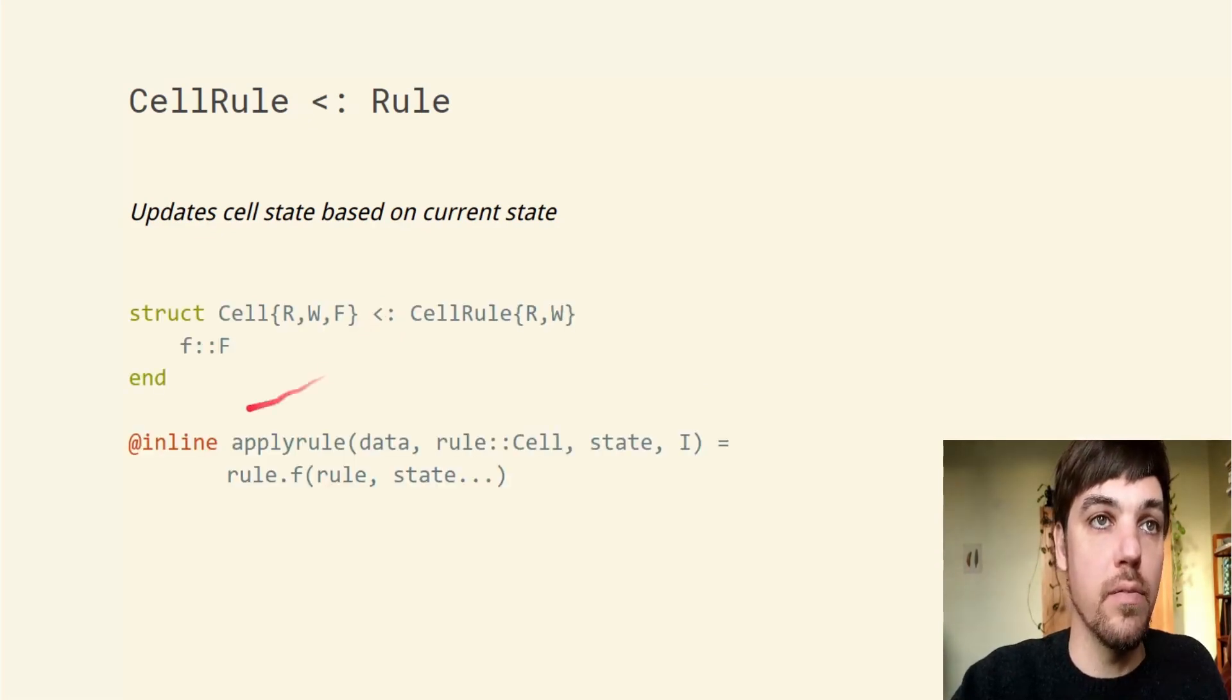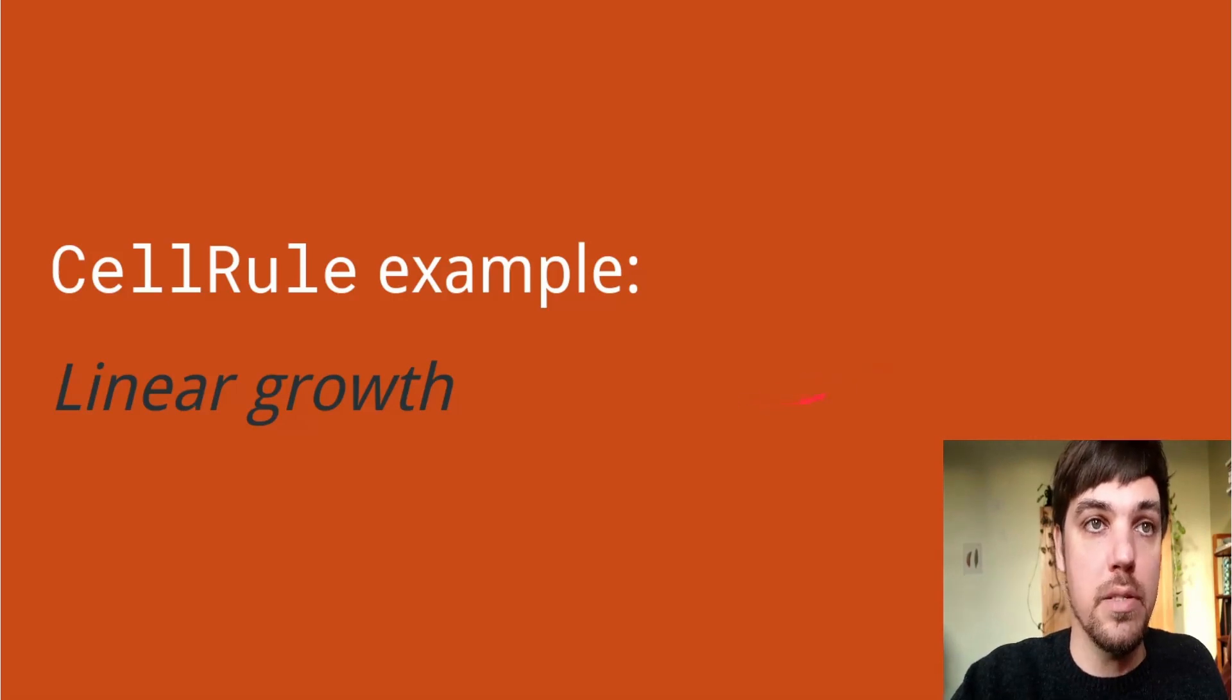We can define that very simply for this rule that just runs an anonymous function. It's available in the dynamic grids package. It defines an apply rule method in which the function is applied.